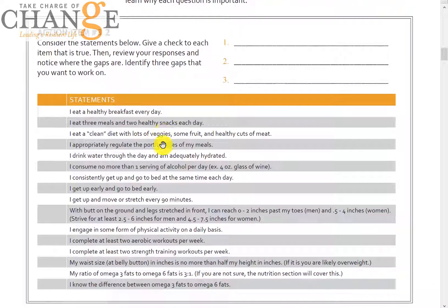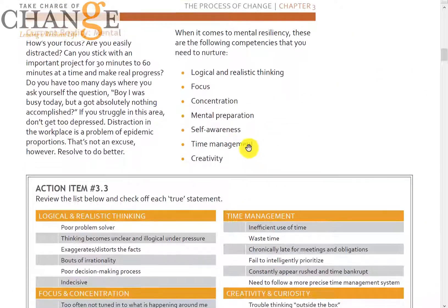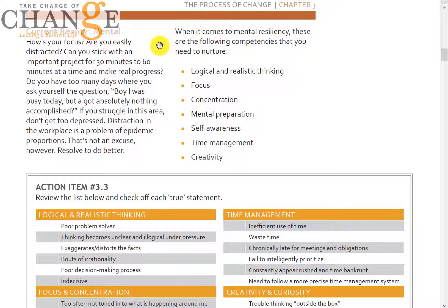Let's go to the physical reality. This is a self-assessment listing some of the most accepted best practices around managing your physical reality. For example: 'I eat a healthy breakfast every day.' I personally practice intermittent fasting and intentionally don't have breakfast, but I focus on eating clean meals and a healthy diet through the day — fruits, veggies, some fruit, healthy cuts of meat like grass-fed cuts. I drink water through the day and stay adequately hydrated. Your level of hydration has a huge impact on cognition. Go through the assessment and write down three areas you need to zero in on for your physical resilience.